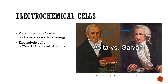Voltaic cells and galvanic cells are the exact same thing. So if I say voltaic cell or galvanic cell, those are the same things. In these kinds of cells, we're going to take a chemical reaction and use that to push electrons around. Electrons moving is electricity — so we're taking a spontaneous chemical reaction and using that to push electrons. That's electricity.